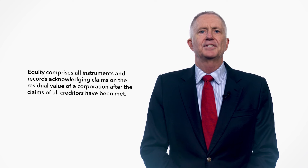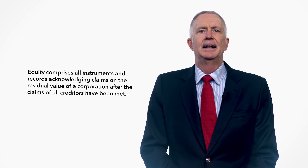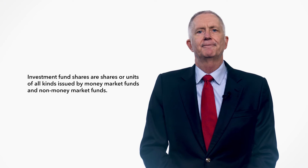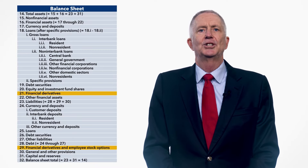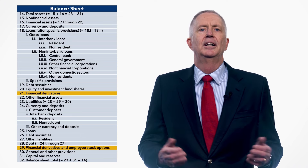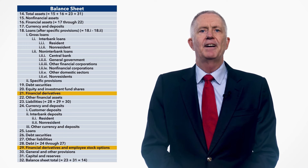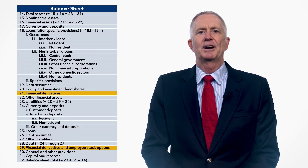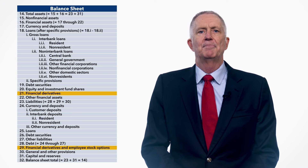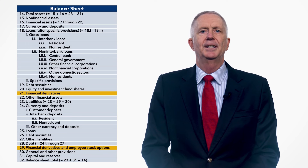Line 20 includes equity instruments and investment fund shares. Equity comprises all instruments and records acknowledging claims on the residual value of a corporation after the claims of all creditors have been met. Investment fund shares are shares or units of all kinds issued by money market funds and non-money market funds. Non-money market funds are collective investment schemes such as mutual funds which raise funds from the public. Financial derivatives, lines 21 and 29, comprise instruments that are linked to another specific financial instrument, indicator, or commodity, permitting specific financial risks such as foreign exchange risk to be traded in their own right. The 2019 FSI's guide clarifies that employee stock options are a form of derivative liability and when issued should be included in line 29 with other derivative liabilities.